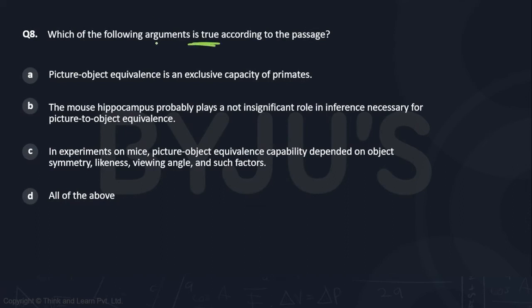What is true? Which of the following arguments is true according to the passage? Picture object equivalence is an exclusive capacity of primates. This is wrong on so many fronts. Even earlier, our passage says primates and some birds. Earlier that was what was believed. And then it shows through a study that even rodents are capable of it.